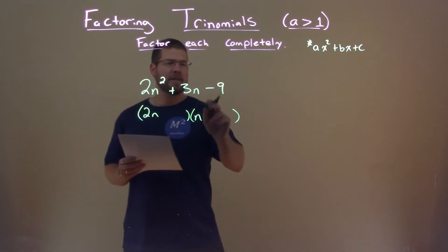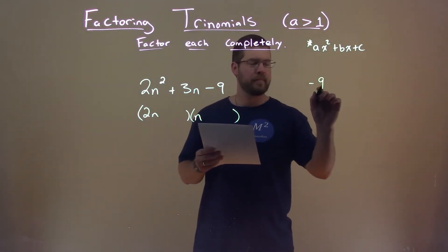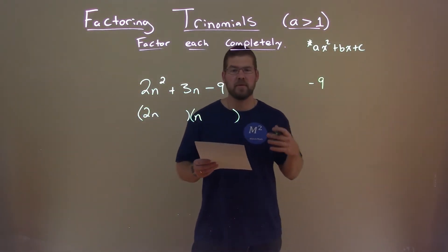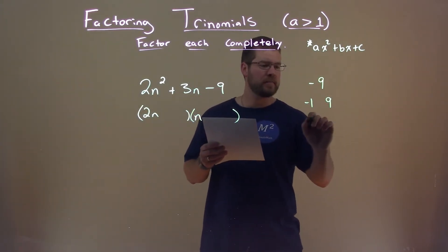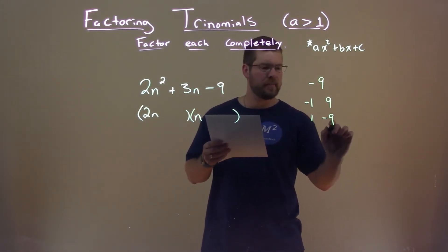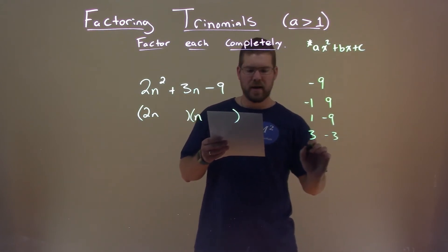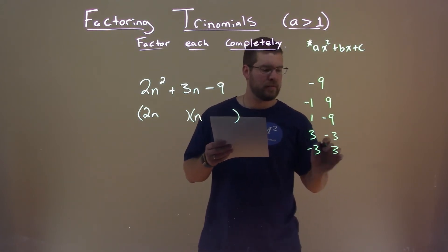Well, I need to look at my c value, negative 9, and I need to make a list of the numbers that multiply to be negative 9. That's negative 1 and positive 9, 1 and negative 9, 3 and negative 3, and negative 3 and positive 3.